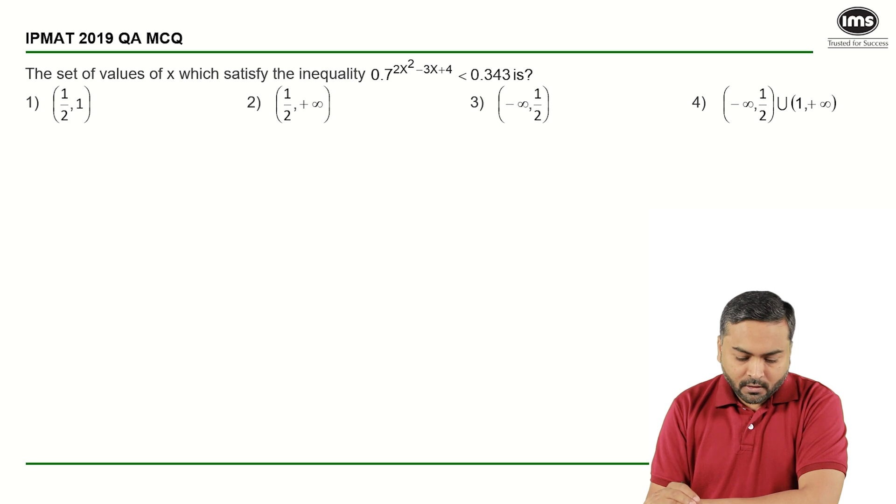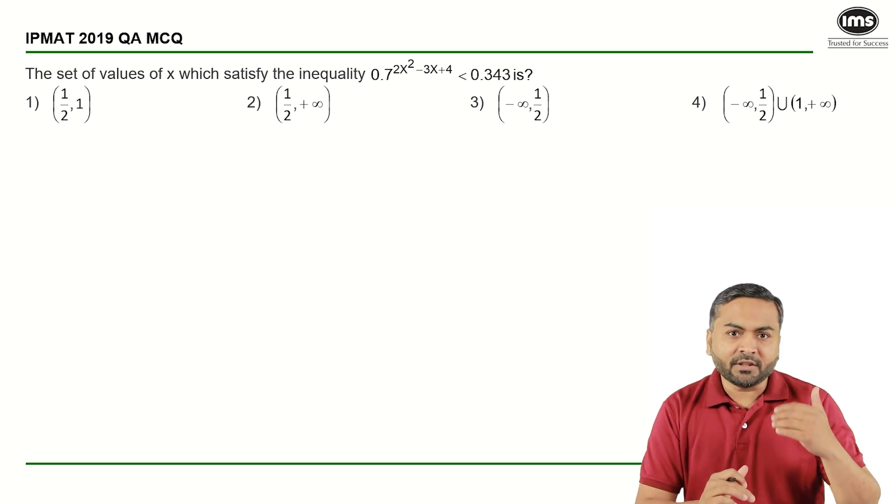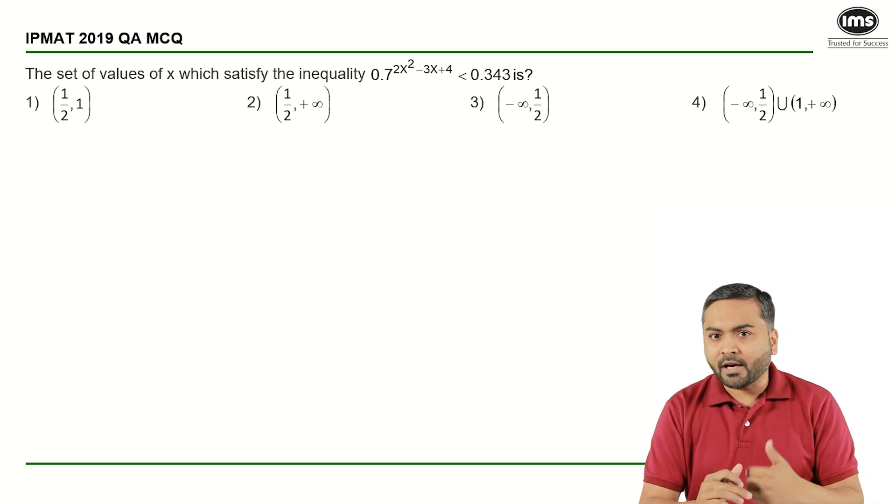Let's look at the question. The set of values of x which satisfy the inequality. Now if I look at this particular inequality, on the left hand side it is 0.7 raised to something and on the right hand side it is 0.343.